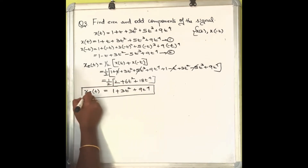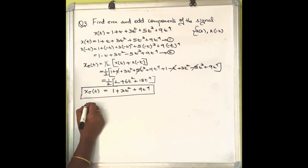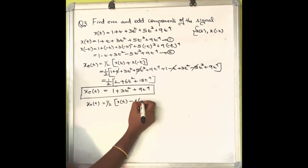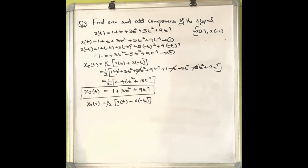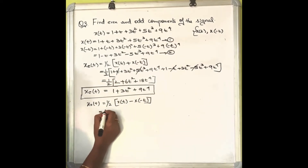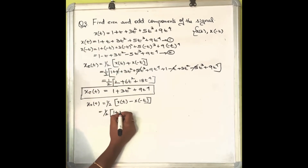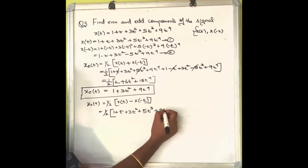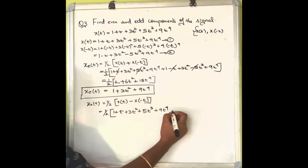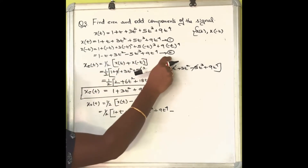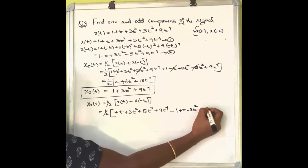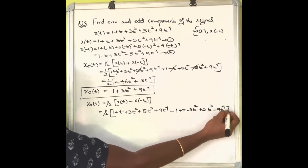So this is the even part of the signal. To find the odd part, the formula is x_o(t) = half of [x(t) - x(-t)]. Substituting: half of [(1 + t + 3t² + 5t³ + 9t⁴) minus (1 - t + 3t² - 5t³ + 9t⁴)]. Distribute the minus sign to get minus 1 + t - 3t² + 5t³ - 9t⁴.